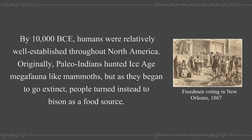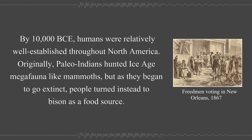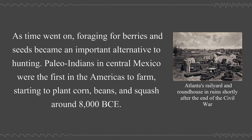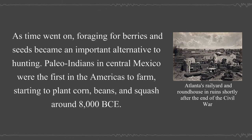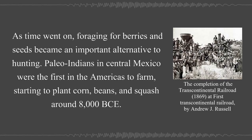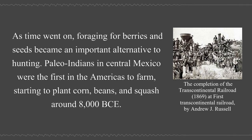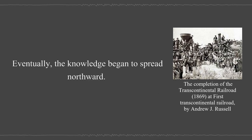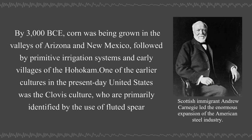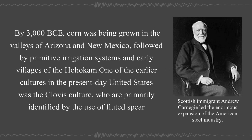Originally, Paleo-Indians hunted Ice Age megafauna like mammoths, but as they began to go extinct, people turned instead to bison as a food source. As time went on, foraging for berries and seeds became an important alternative to hunting. Paleo-Indians in Central Mexico were the first in the Americas to farm, starting to plant corn, beans, and squash around 8,000 BCE. Eventually the knowledge began to spread northward. By 3000 BCE, corn was being grown in the valleys of Arizona and New Mexico, followed by primitive irrigation systems in early villages of the Hohokam.